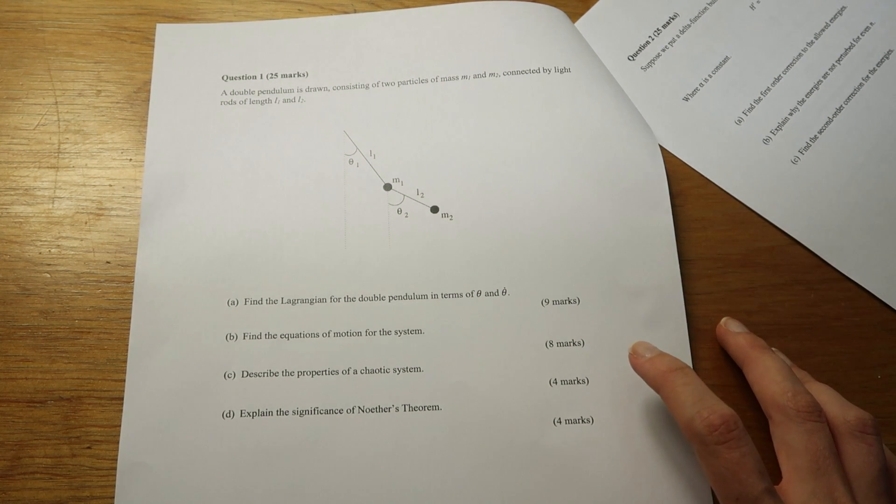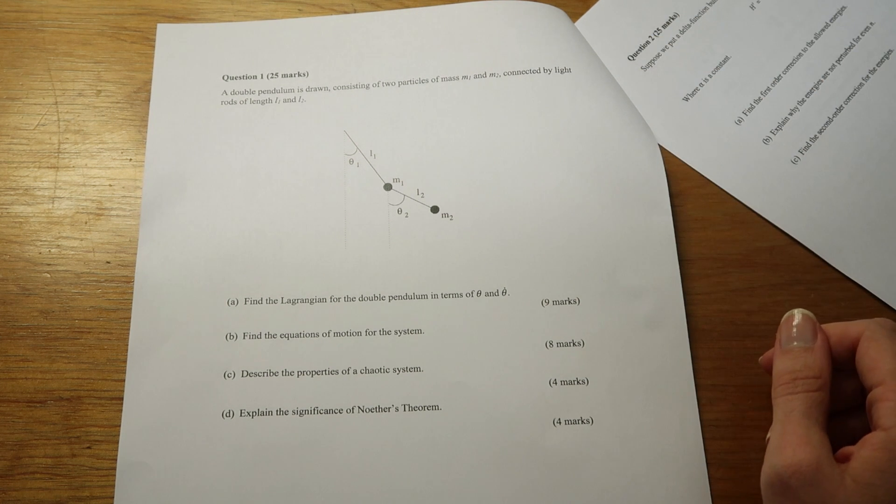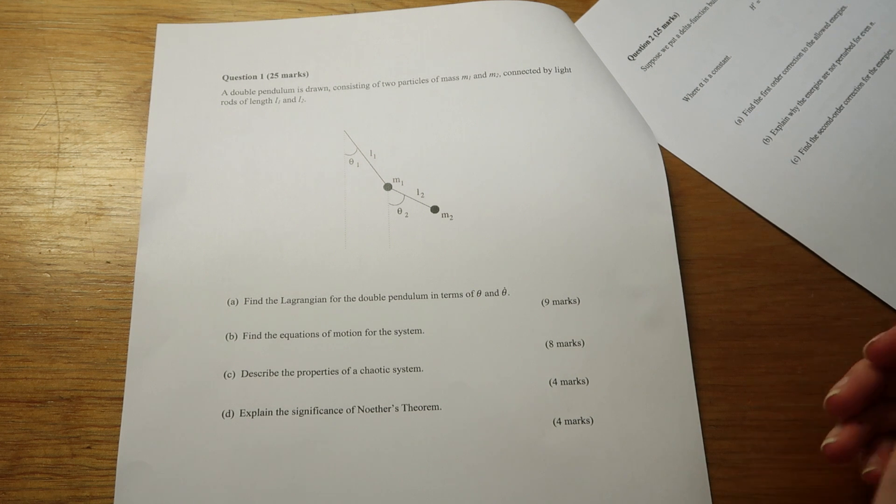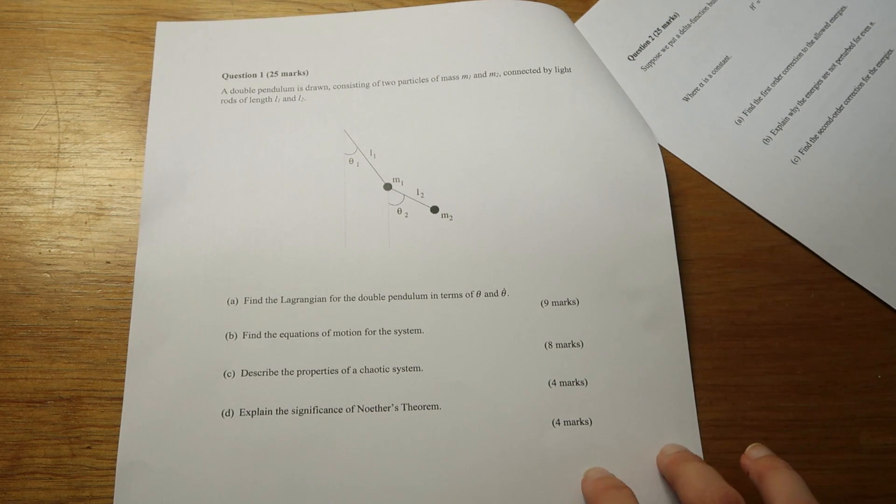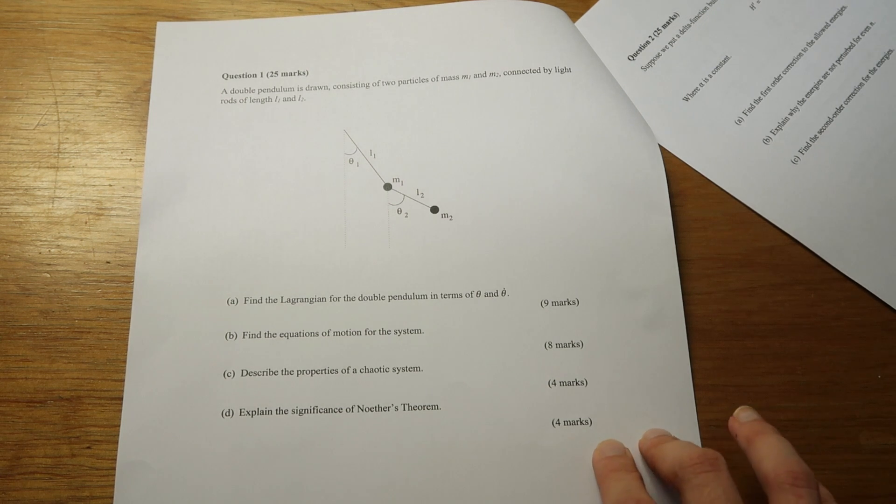Then you're asked to describe the properties of a chaotic system. That'll be saying something like a chaotic system, which a double pendulum is, while small deviations in where it starts or in the initial condition can lead to vastly different outcomes over time. And then lastly for this question we've got explain the significance of Noether's theorem.